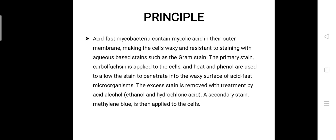This makes the cell waxy and resistant to staining with aqueous based stains such as gram stain. The primary stain carbolfuchsin is applied to the cells and heat and phenol are used to allow the stain to penetrate into the waxy surface of acid fast microorganisms.